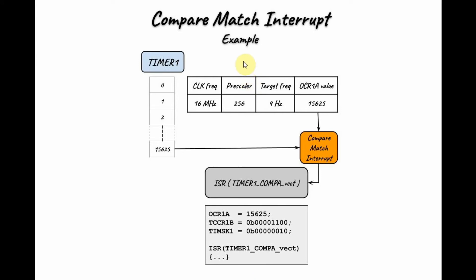As an example, let's say we want to toggle an LED at a frequency of 4 Hz using the compare match interrupt technique. Starting with a clock frequency of 16 MHz and a prescaler of 256, we divide the clock frequency by the prescaler and then by the target frequency of 4 Hz, giving us the integer value 15,625. This value is stored in the output compare register OCR1A for Timer 1. When the program executes, Timer 1 counts up from 0 until it reaches 15,625, triggering a compare match interrupt, which calls the interrupt service routine containing the code to blink the LED.